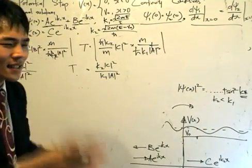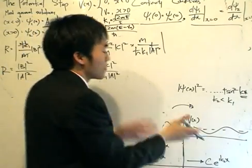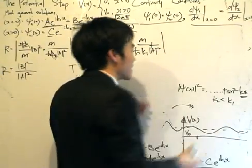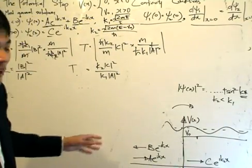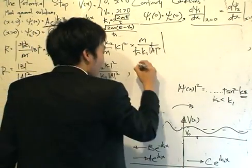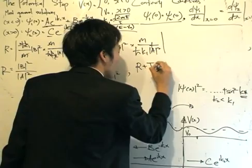We would somewhat expect that we would write B and C in terms of A, because A is the intensity of the plane wave that is going to the potential step. That is what we started out with. Obviously, what gets reflected and what gets transmitted is dependent on the intensity of the wave that is incident on the potential step.